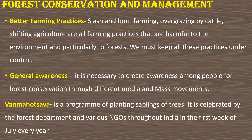Better farming practices: slash-and-burn farming, overgrazing by cattle, and shifting agriculture are all farming practices that are very harmful to the environment and particularly to forests. We must keep all these practices under control. The last point is general awareness — it is necessary to create awareness among people for forest conservation through different media and mass movements. One such program is called Van Mahotsav, a program of planting saplings of trees, celebrated by the forest department and various NGOs throughout India in the first week of July every year.